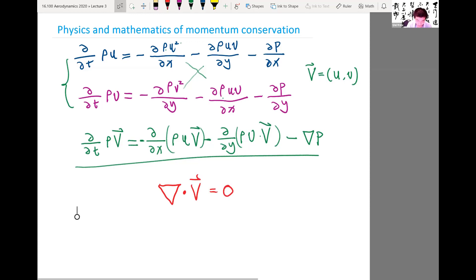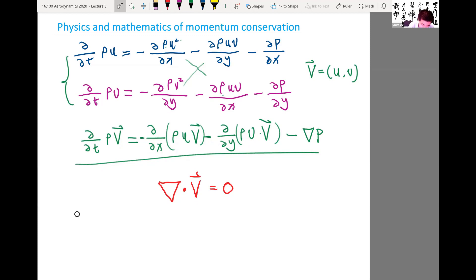So that's what we derived last time, which specifically means ∂u/∂x plus ∂v/∂y equal to zero, right?